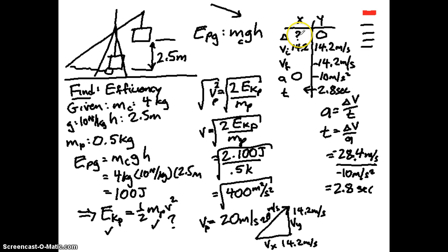In the x-direction, our velocity is not accelerated. So I know that d is equal to vt. Our velocity, 14.2 meters per second. Our time, 2.8 seconds. That works out to just about 40 meters. That's my theoretical distance.